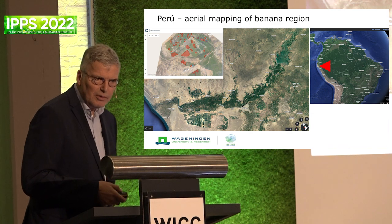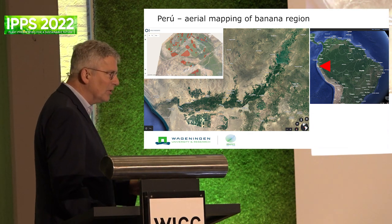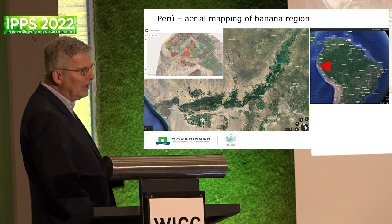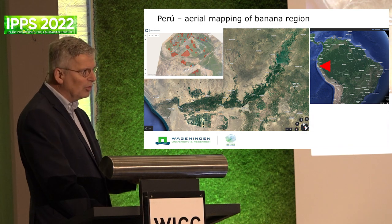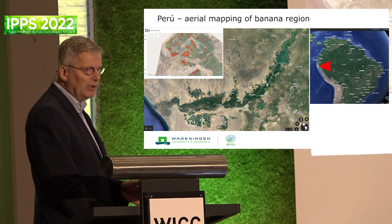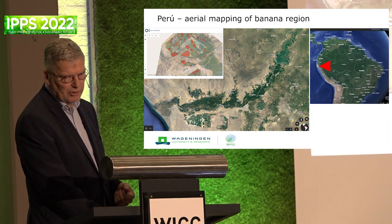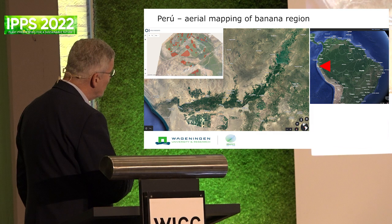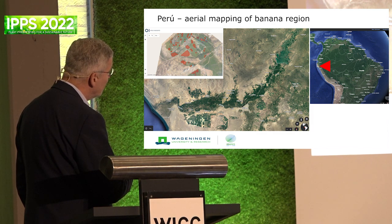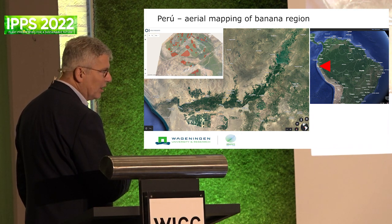Here is another level of mapping and phenotyping - going from the cell level or plant part level, we also have to consider mapping entire areas. I'm not talking about an individual field - we can map an entire field with a drone, but you cannot map a region with a drone. What we're doing here, in Peru - this particular area called Piura - is mapping at landscape scale. Tropical Race 4 has arrived here in Colombia and here in Piura.